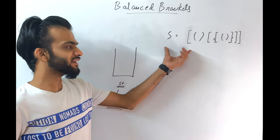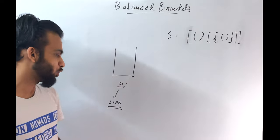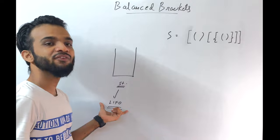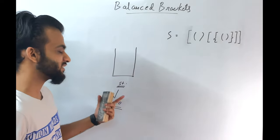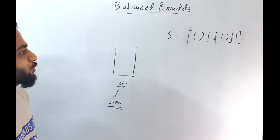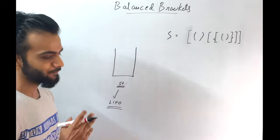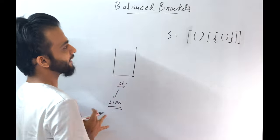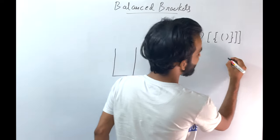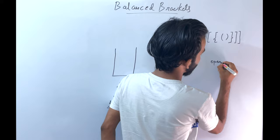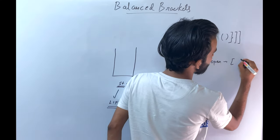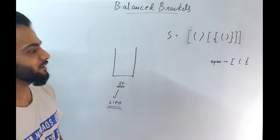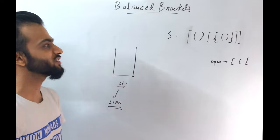In order to check if this given string is a balanced bracket or not, we have to use the Stack Data Structure, which is a last-in, first-out data structure. If you don't know what a stack is, you can definitely watch my previous videos. Whenever it's an opening bracket — the opening brackets can be of these kinds — whenever it's an opening bracket, please push it into the stack.